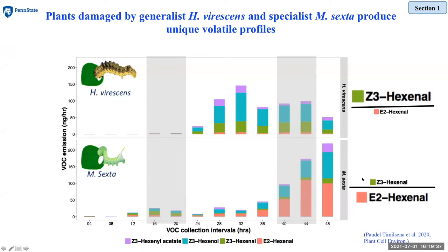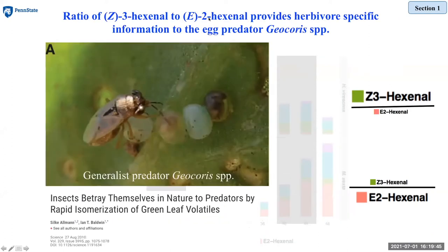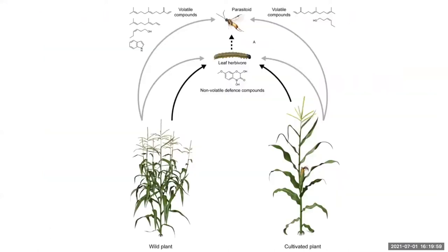There is a small amount of Z3-hexanol and a larger amount of E2-hexanol. The ratio of Z3 to E2 hexanol provides herbivore-specific information to the egg predator of Manduca sexta. Similarly, when fall armyworm feeds on maize plant or when the fall armyworm moth lays eggs on a maize plant, the maize plant releases fall armyworm-specific volatiles that attract the natural enemies of fall armyworm, such as parasitoids, which can then control the fall armyworm population in the field.